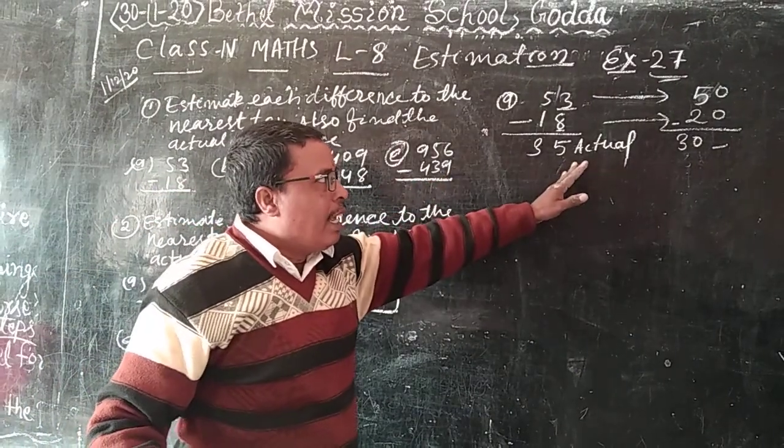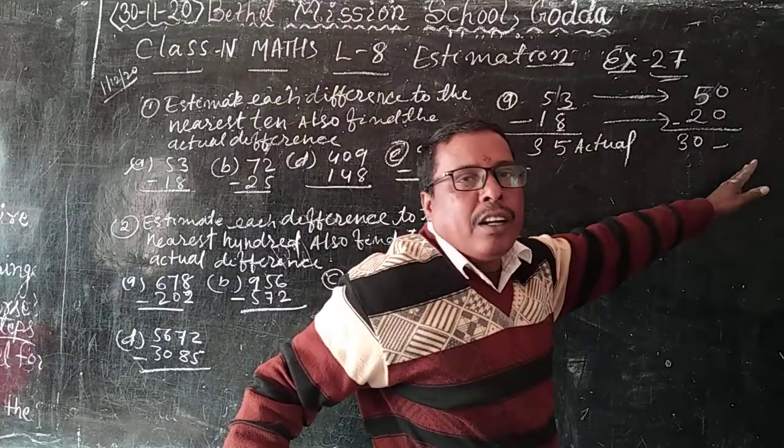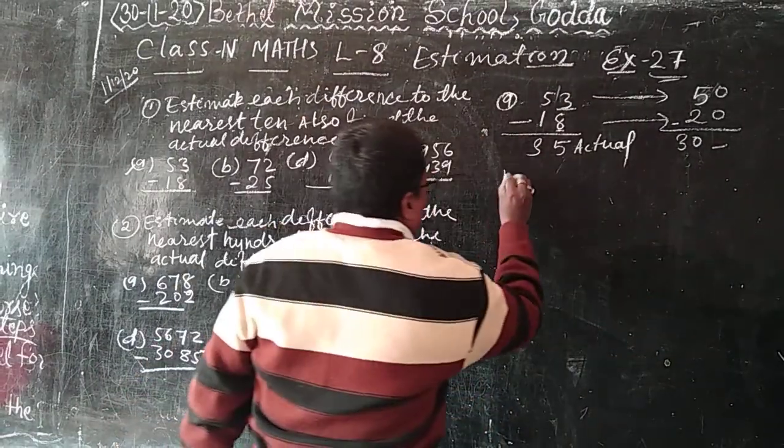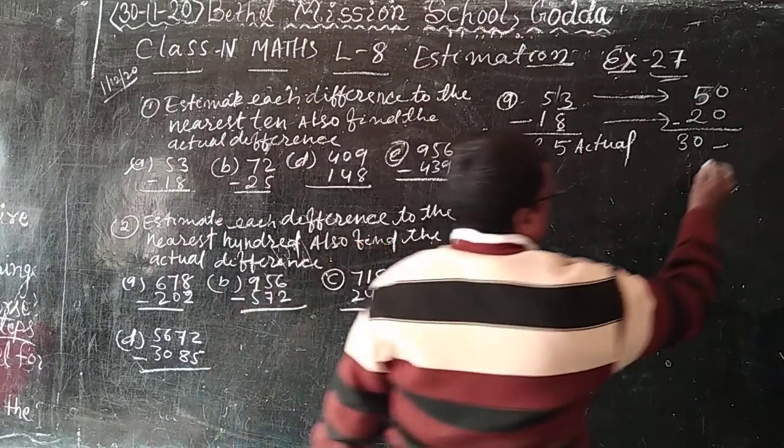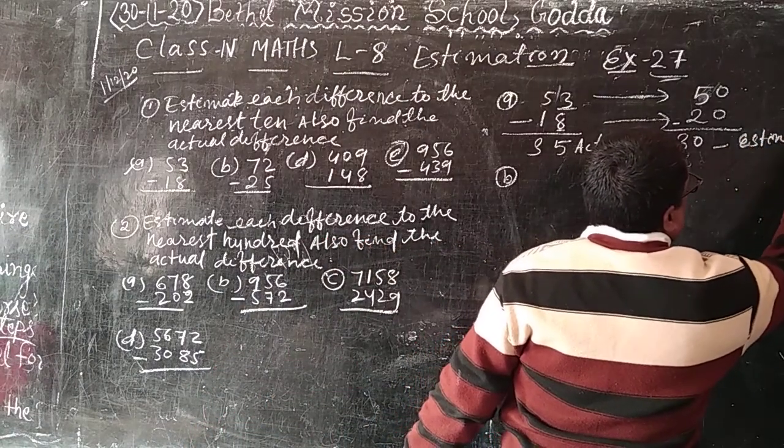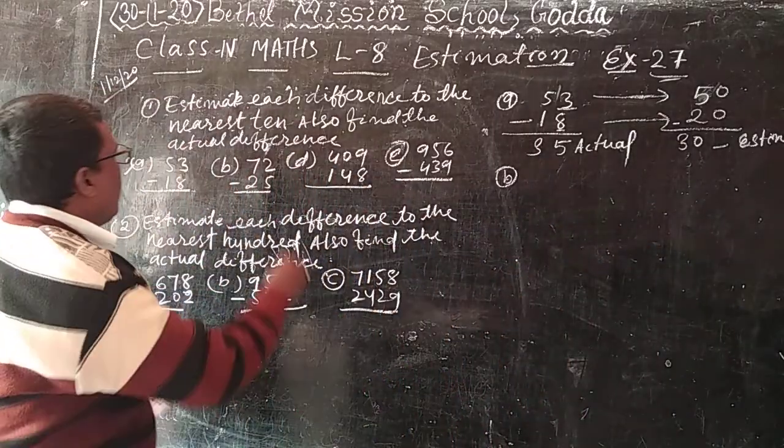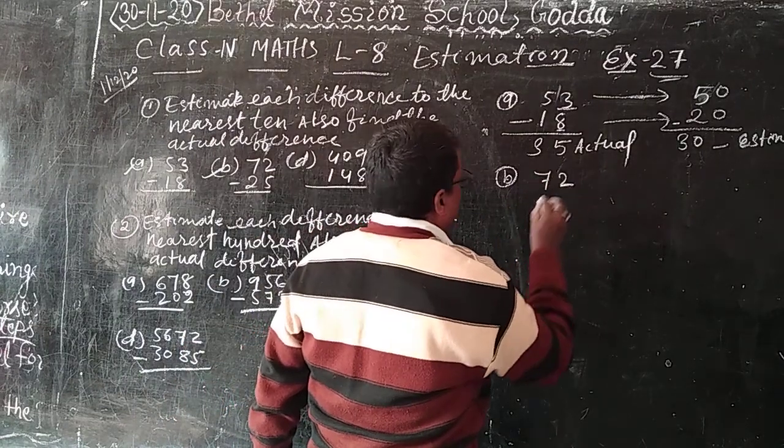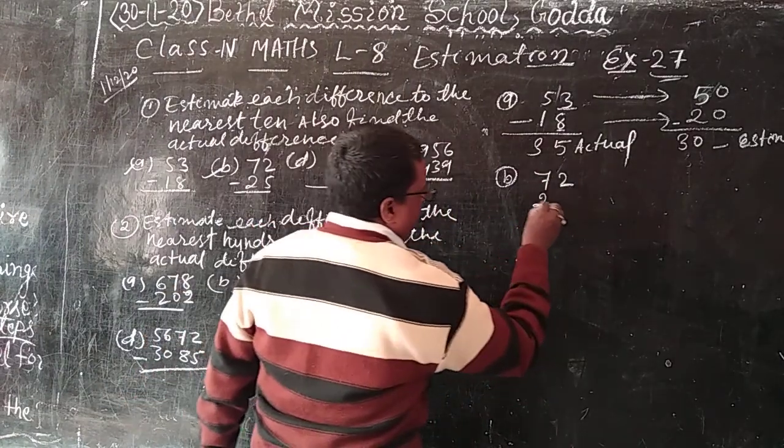This is actual, and this is estimate of the nearest 10. Clear? B number? 72 minus 25.